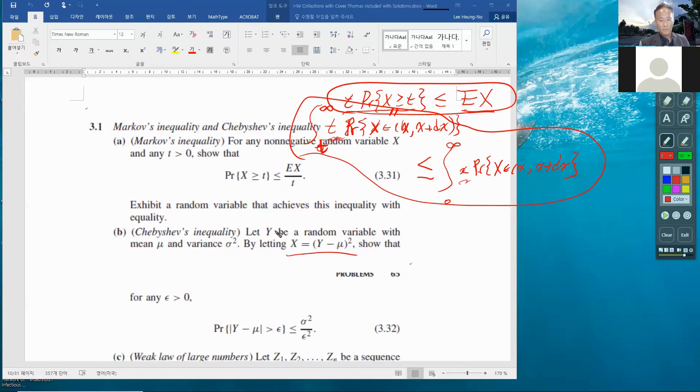So once you have proven Markov inequality you can utilize these values using some utility random variable y which has a mean mu and variance sigma square, and then you can obtain Chebyshev inequality and then you can use this to obtain the law of large numbers.